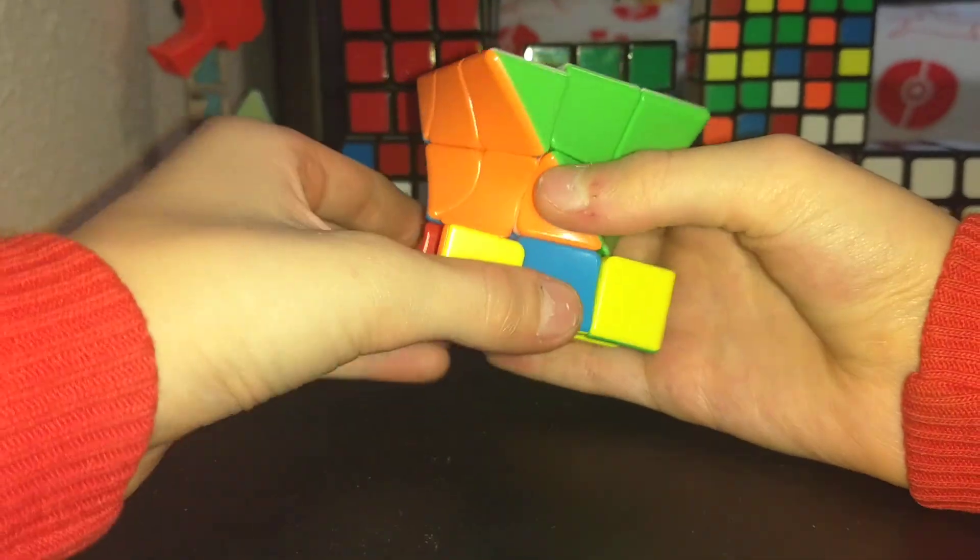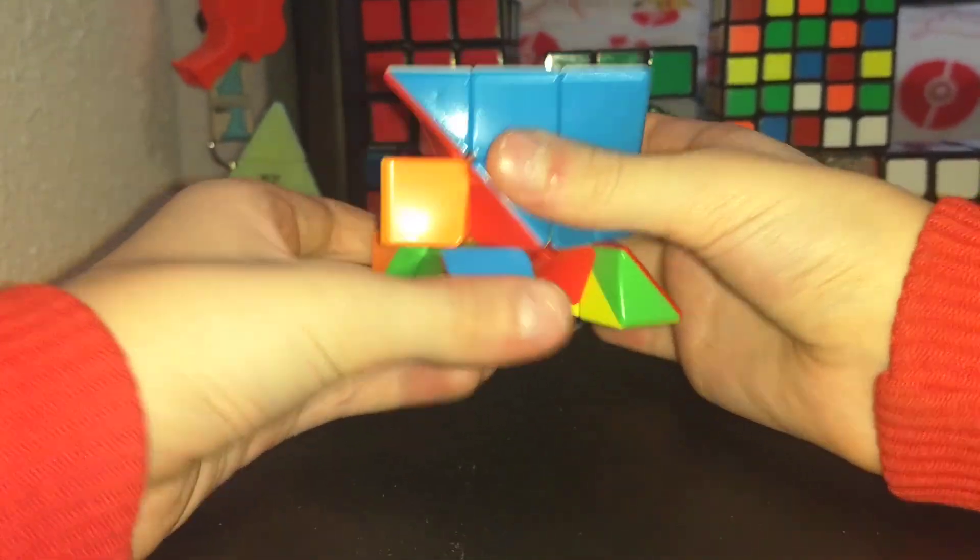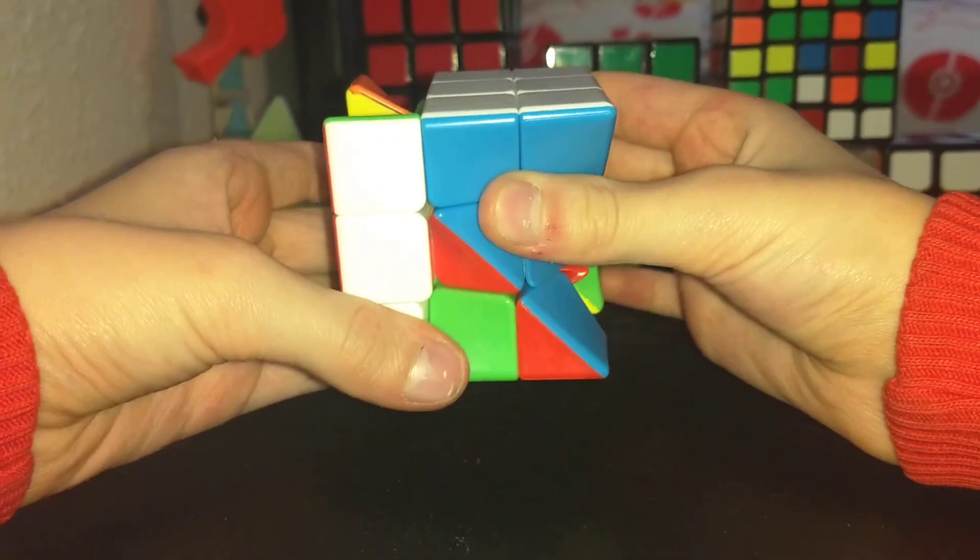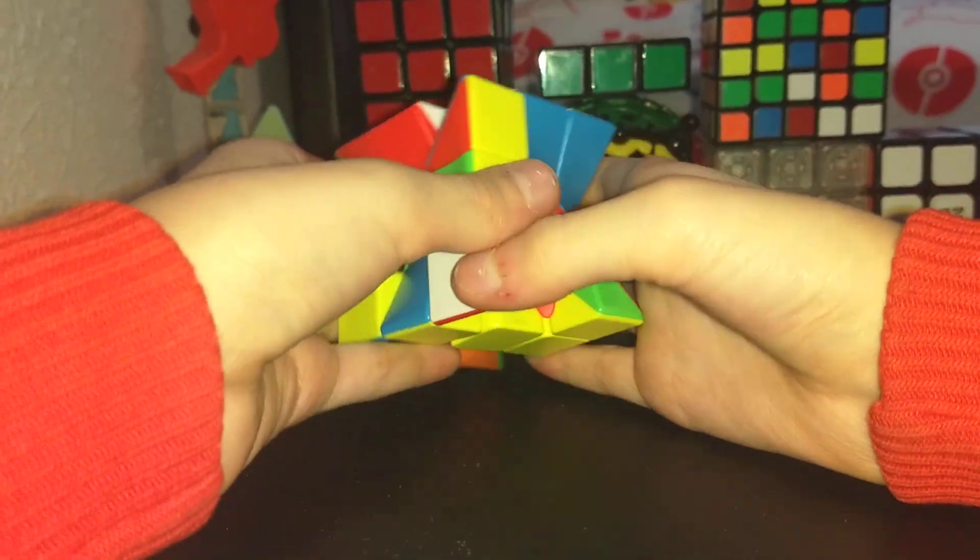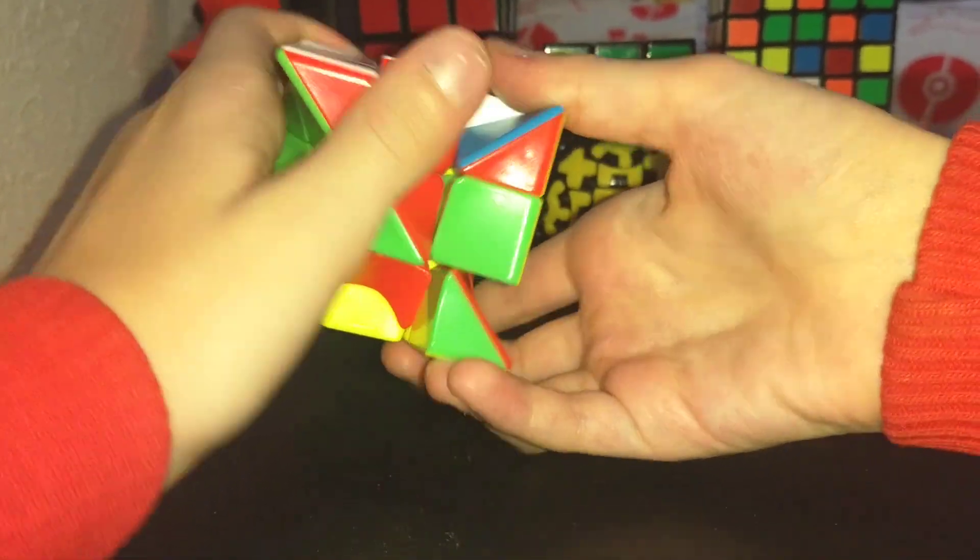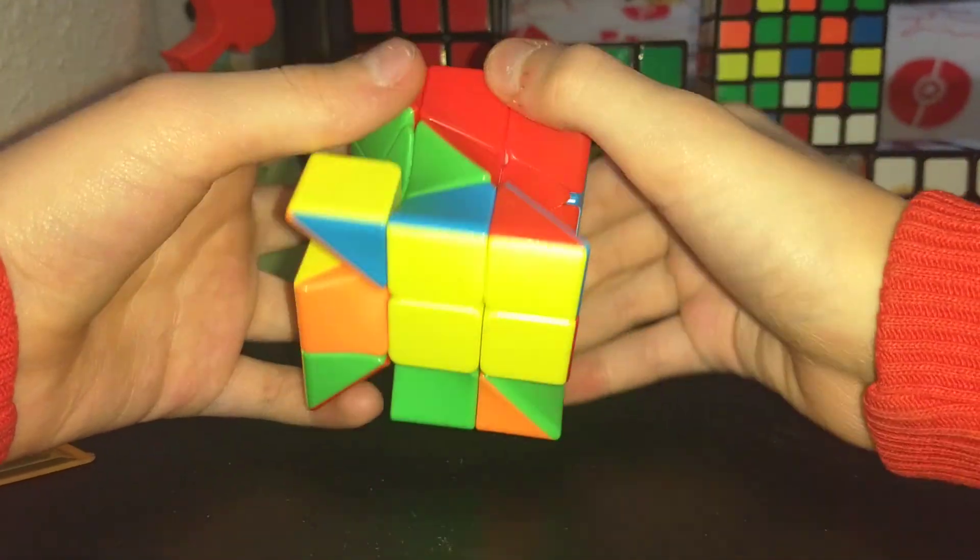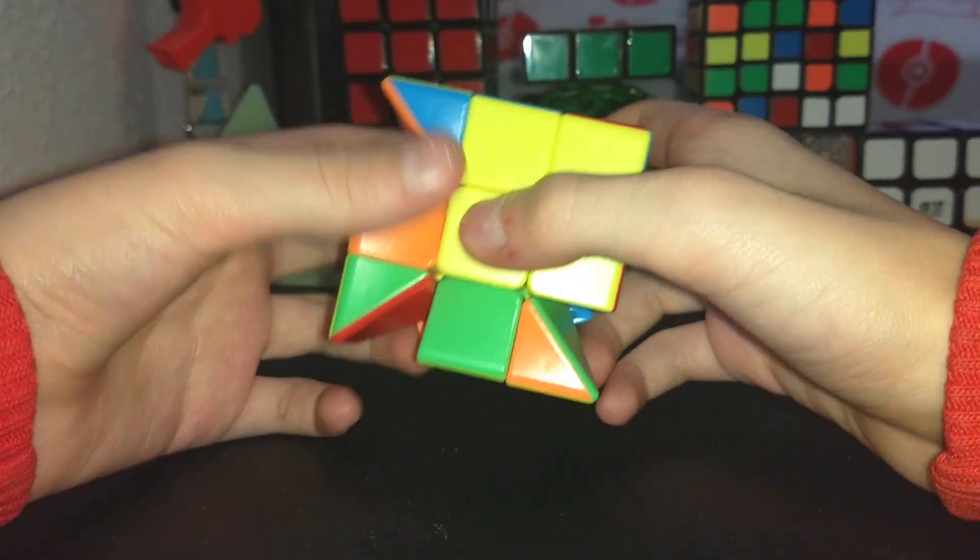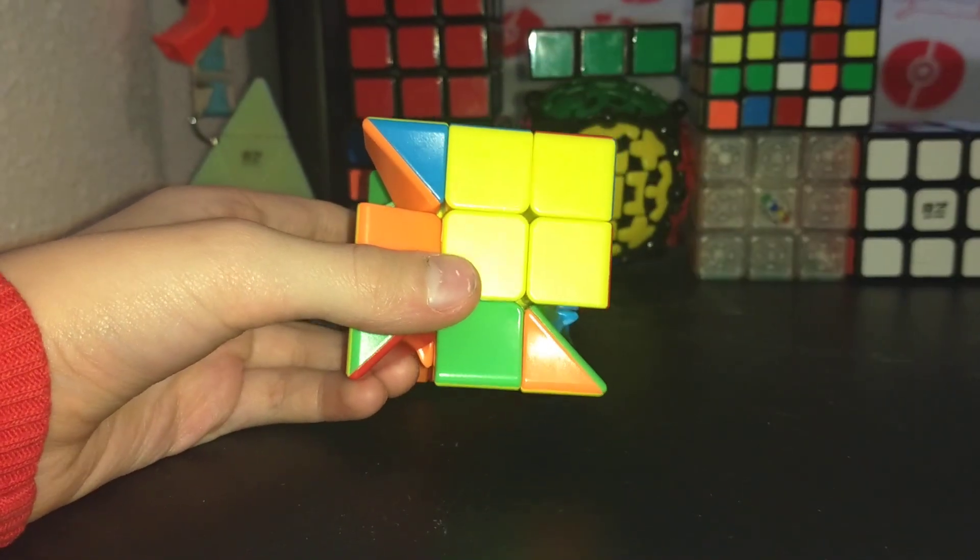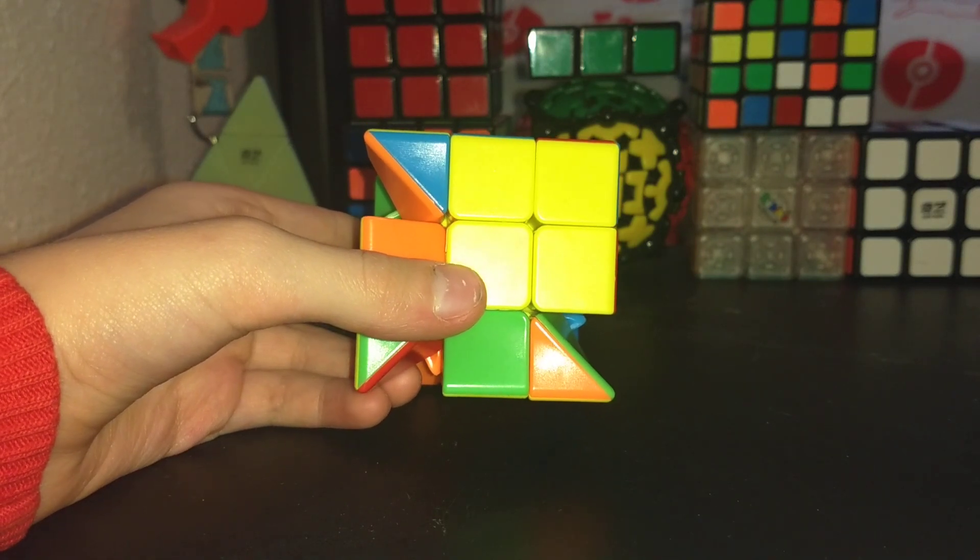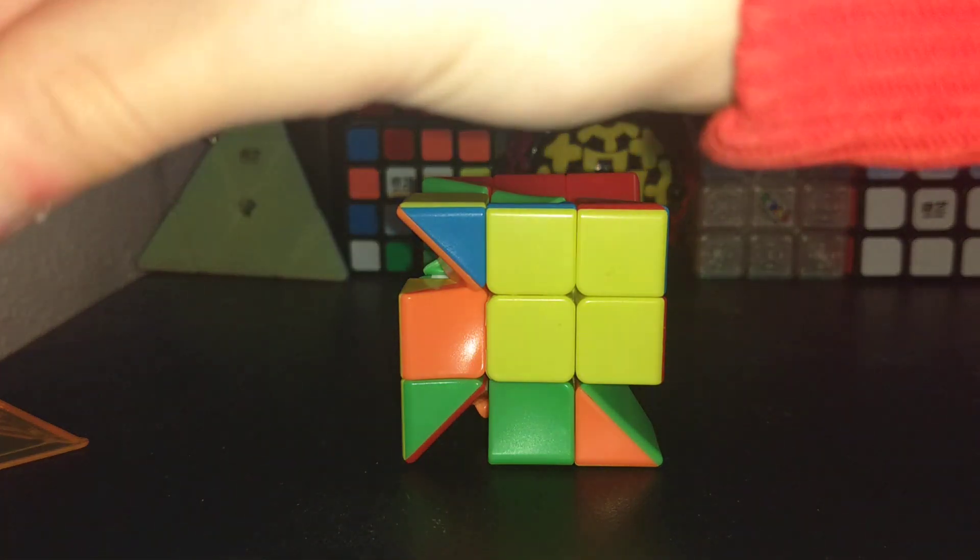Oh nope, no, got to do one more. And then the last layer. Okay. So once you get the middle layer done, you're going to have the dot, the L, the line, or the cross. But I'm just going to show you a case you might have, and I will show you that now. Look, it's my hand. Okay.